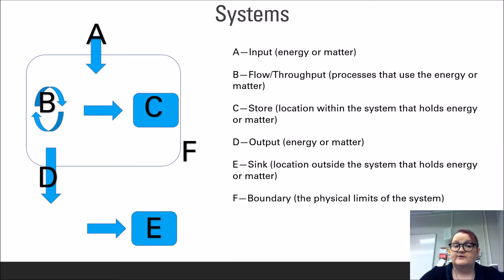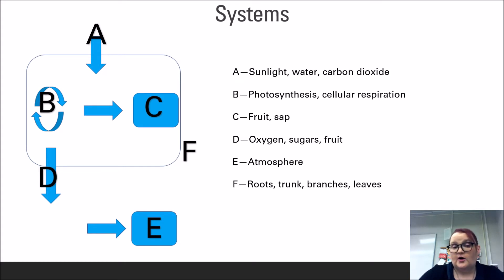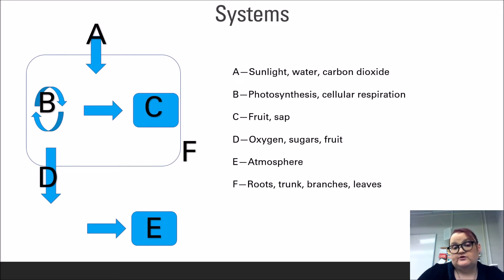The most common sinks in environmental science are the soil, water, and atmosphere. Let's look at an example: imagine an apple tree. The physical structure of the tree — its leaves, roots, and trunk — determines the boundaries of the system. Sunlight, water, nutrients, and carbon dioxide enter the system through a variety of methods. These inputs go through the processes of photosynthesis and cellular respiration, where they are used to directly produce energy or store it in the form of sugar. Those sugars can be moved into stores like fruit or sap, where the tree can reuse the resource later.